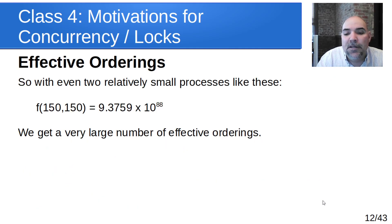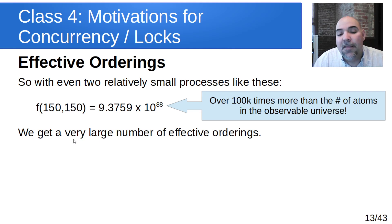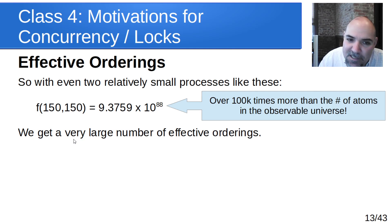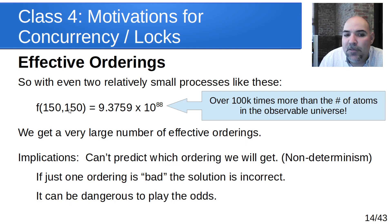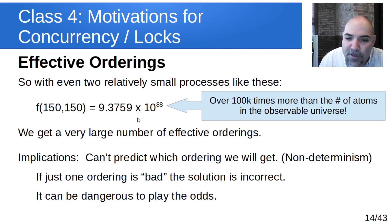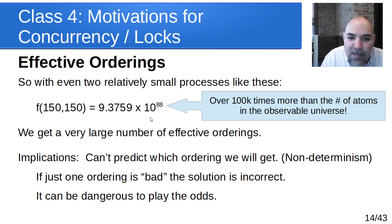That number of orderings is over 100,000 times more than the estimated number of atoms in the observable universe. With two relatively simple processes, there are so many effective orderings — and that is why concurrency is dangerous. You can't predict which ordering you're going to get because it's non-deterministic. You're rolling the dice, and if just one ordering is bad, the solution is incorrect and could fail when executed.